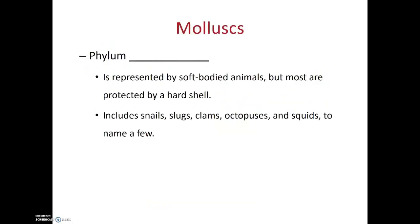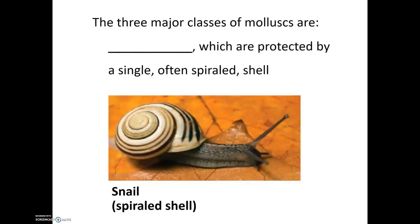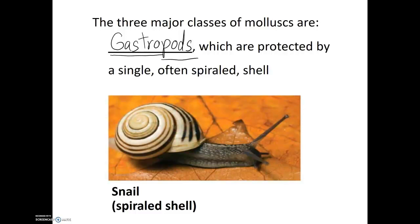We'll start by talking about phylum Mollusca. Phylum Mollusca is represented by soft-bodied animals, but most are protected by a hard shell. This includes things like snails, clams, and oysters, but also slugs, octopuses, and squids. There are three major classes which make up phylum Mollusca. The first are the gastropods — organisms that have a muscular foot and are often protected by a single, spiraled shell. Gastro refers to stomach, and pod refers to foot, so their name literally translates into 'stomach foot.'